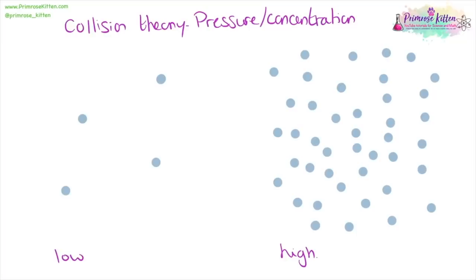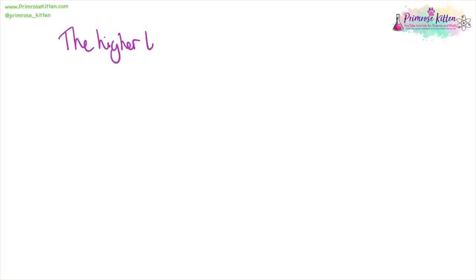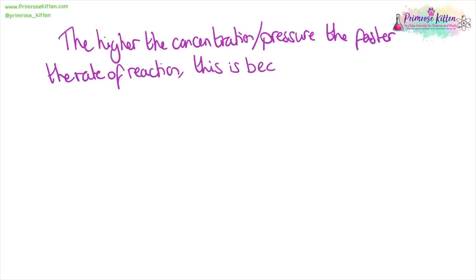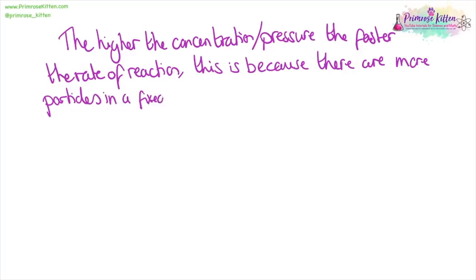If we have things at high pressure or at a high concentration, there are more of them, which means they're much more likely to bump into each other and react, whereas at a low concentration, they're not very likely to bump into each other and react. We can say that the higher the pressure or concentration, the faster the rate of reaction will be. This is because there are more particles in a fixed volume, so there is a higher chance of a successful collision.